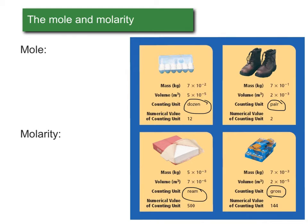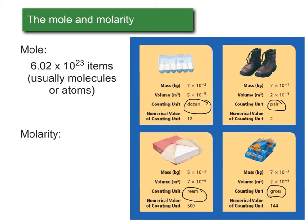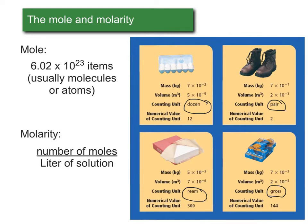While a dozen equals 12 things, a mole equals 6.02 × 10²³ things. It takes a little getting used to, but don't be alarmed — we're not going to do a whole lot of calculations with this number in particular. You do need to understand that a mole is a whole lot of molecules. Molarity is the way we express concentration: molarity is equal to the number of moles of solute per liter of solution.